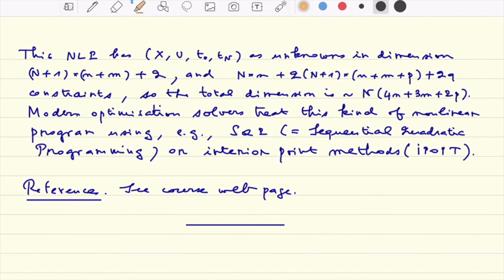So to conclude, this NLP has the vector capital X and capital U. So in the notation here, capital X is the vector x0 to x capital N, U is u0 to u N.